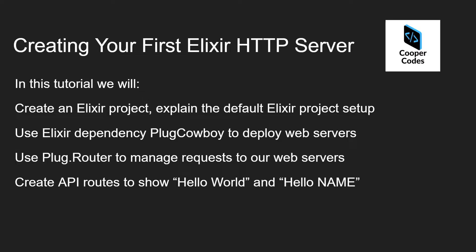We're going to start by creating an Elixir project and then explaining the default folder setup of Elixir. We're then going to move on to explaining the Elixir dependency plug_cowboy to deploy web servers, then use the plug.router library to manage requests, and finally create some API routes showing data such as hello world and hello name.